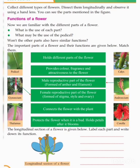Thalamus provides color, fragrance and attractiveness to the flower. Corolla is the part that provides color and fragrance. Andresium is the male reproductive part of the flower. Gynesium is the female reproductive part of the flower. Calyx protects the flower when it is a bud and holds the petals after it blooms.